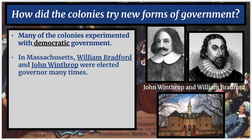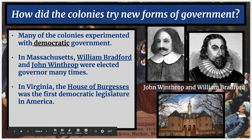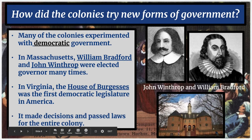In Massachusetts, William Bradford and John Winthrop — you can see their pictures there — were elected governor many times. In Virginia, the House of Burgesses was the first democratic legislature in America. My students over the years have wanted to mispronounce it, but it is the House of Burgesses — the first democratically elected legislature in America. A legislature is a group of people with the power to write laws, and it therefore had the power to make decisions and pass all laws for the entire colony.